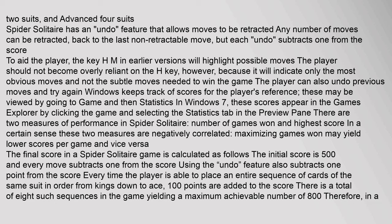To aid the player, the H key in earlier versions will highlight possible moves. The player should not become overly reliant on the H key, however, because it will indicate only the most obvious moves and not the subtle moves needed to win the game. The player can also undo previous moves and try again. Windows keeps track of scores for the player's reference. These may be viewed by going to Game and then Statistics. There are two measures of performance in Spider Solitaire: number of games won and highest score.